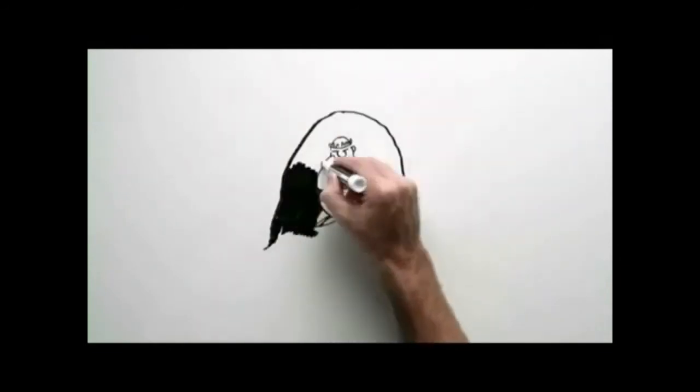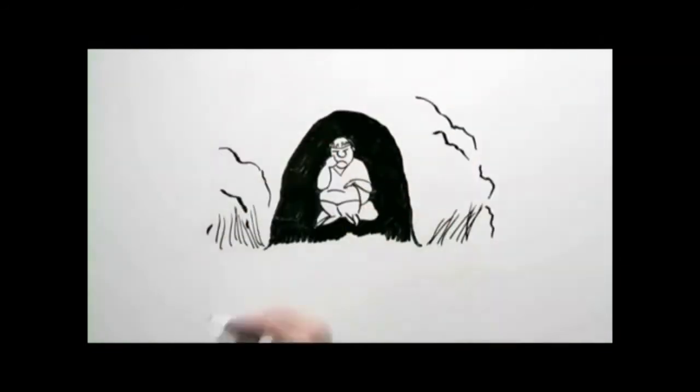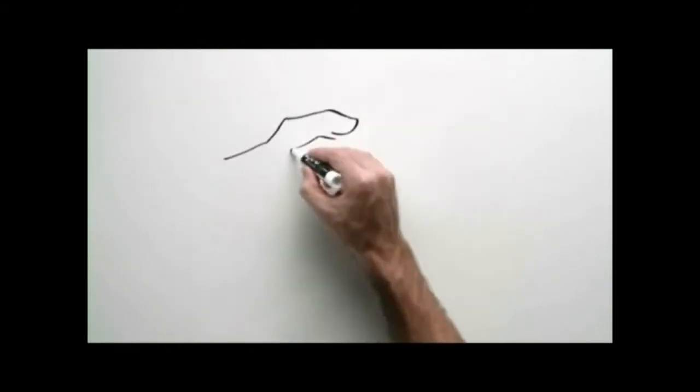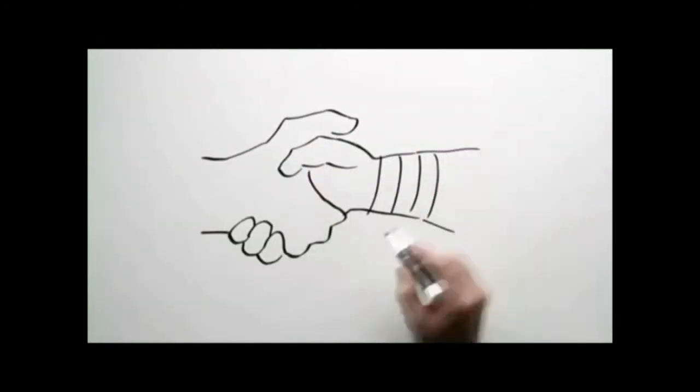One day, Saul was in a cave and David snuck up on him. But David could not bring himself to kill Saul. When Saul realized what had happened, he made a peace treaty with David, promising he would not kill him.